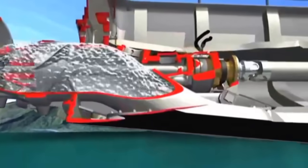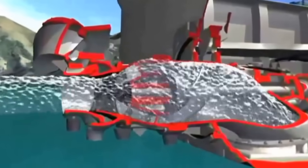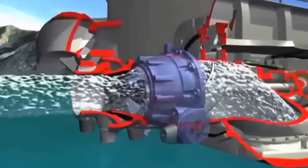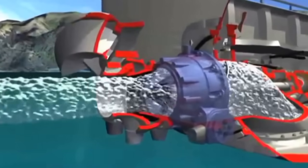Inside the jet unit, the computer-designed impeller accelerates the water, which then passes through a set of fixed stator veins. These remove flow rotation created by the impeller to produce a more uniform and powerful high-velocity jet stream.